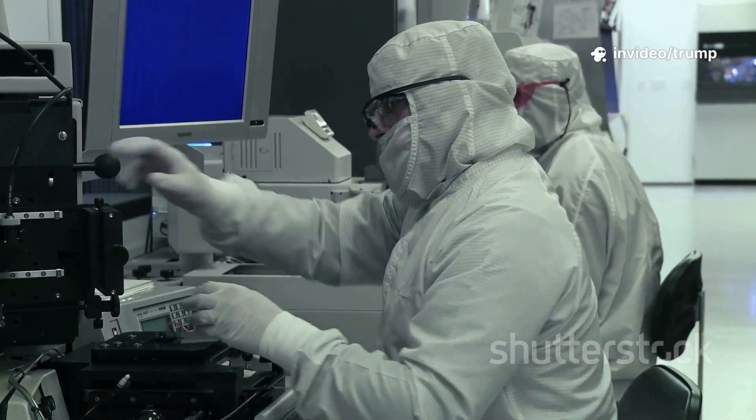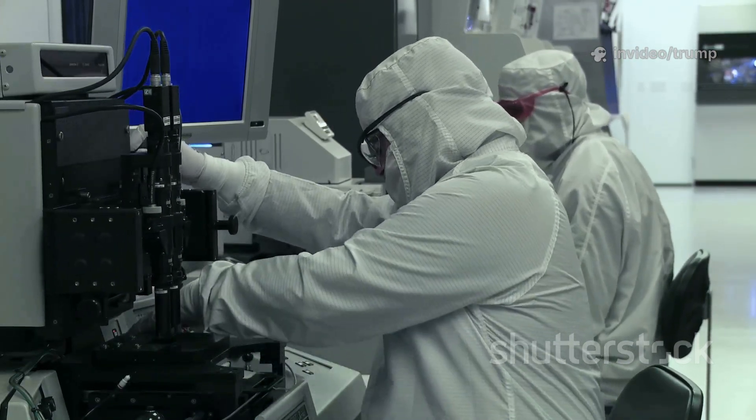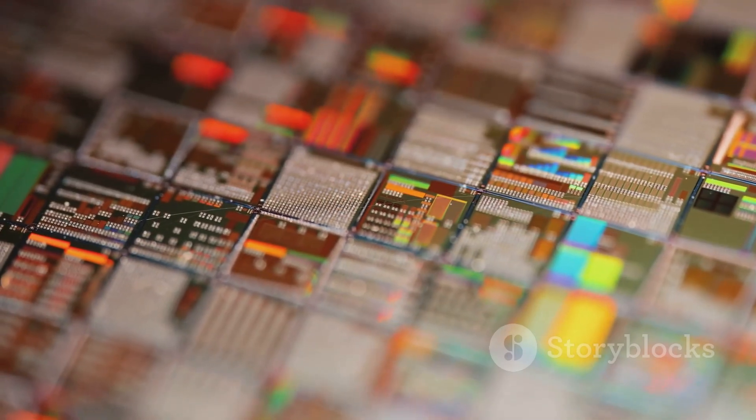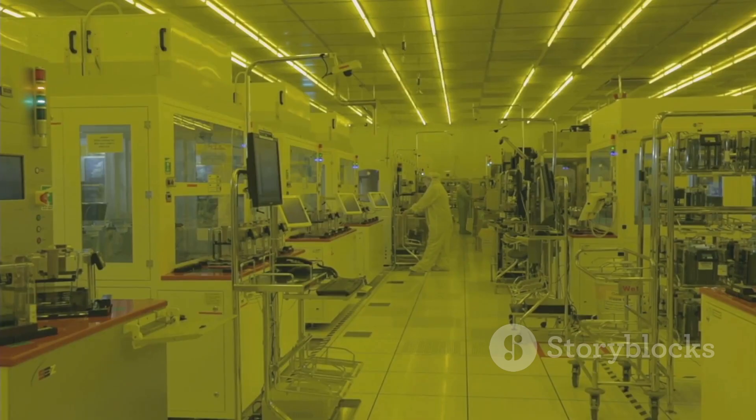The most important of these is the lithography machine, which uses light to print tiny, intricate patterns onto silicon. The smaller the patterns, the more powerful the chip. That's why the race to build better lithography machines is so crucial. It's a race to control the future of technology.